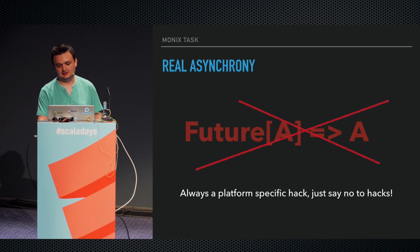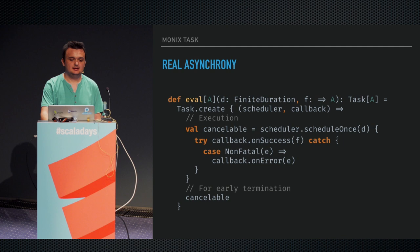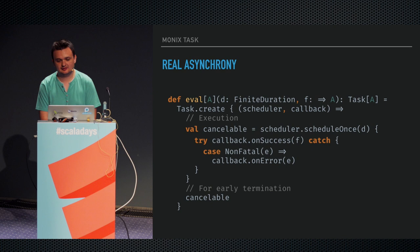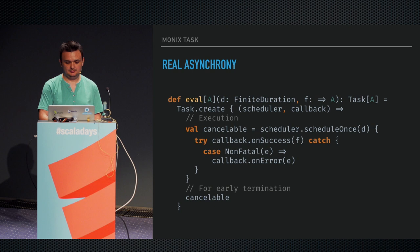The task implementation doesn't expose any blocking operations. To turn an asynchronous process into a task, this is basically the equivalent of using a promise — you give it a function that it can execute on runAsync, and that function will have a callback injected. That callback can be called with the final result of the computation. In this case, we use the scheduler to delay the execution of a function. It's cancelable, so you can return a cancelable reference that can cancel this operation if possible.